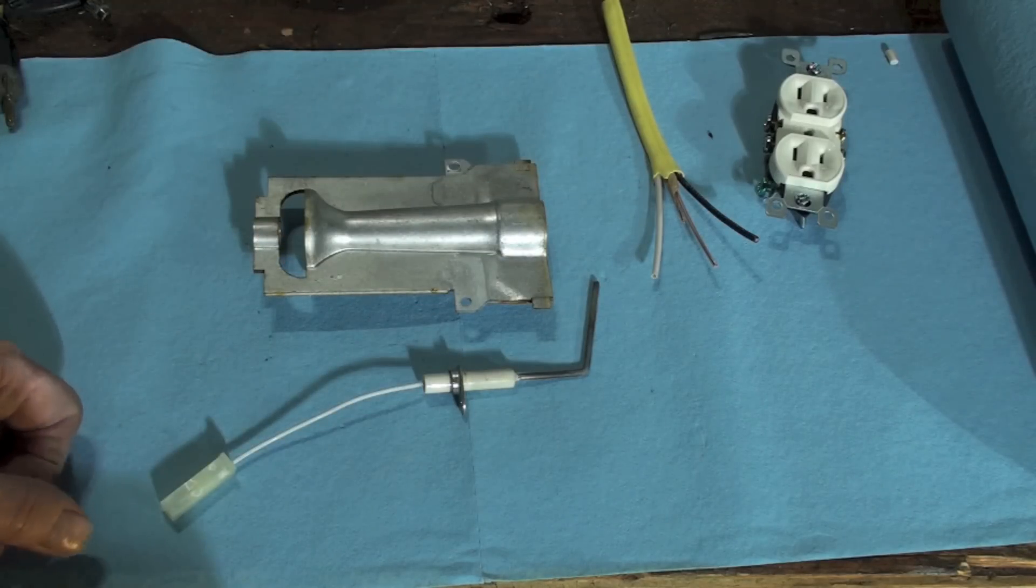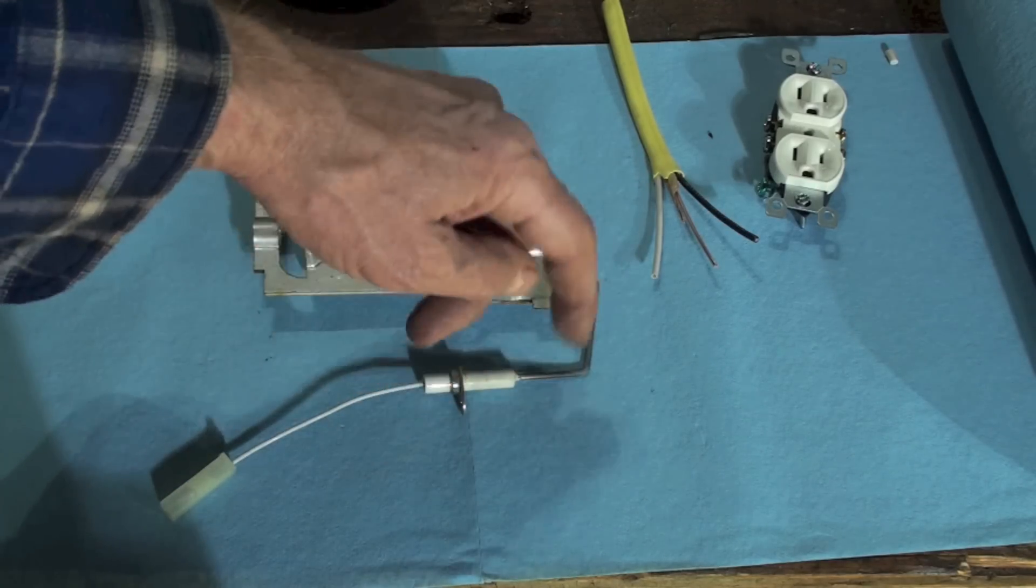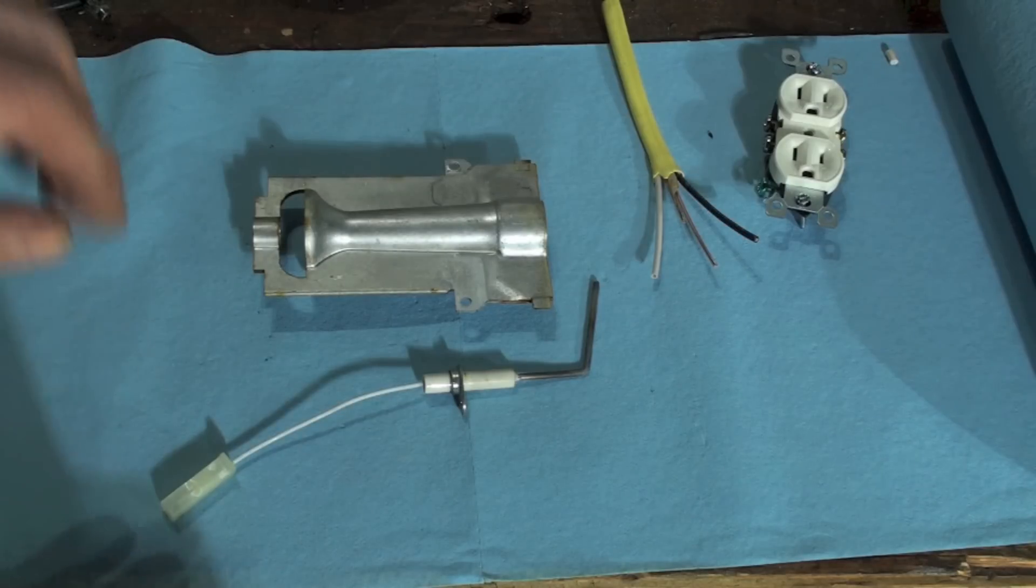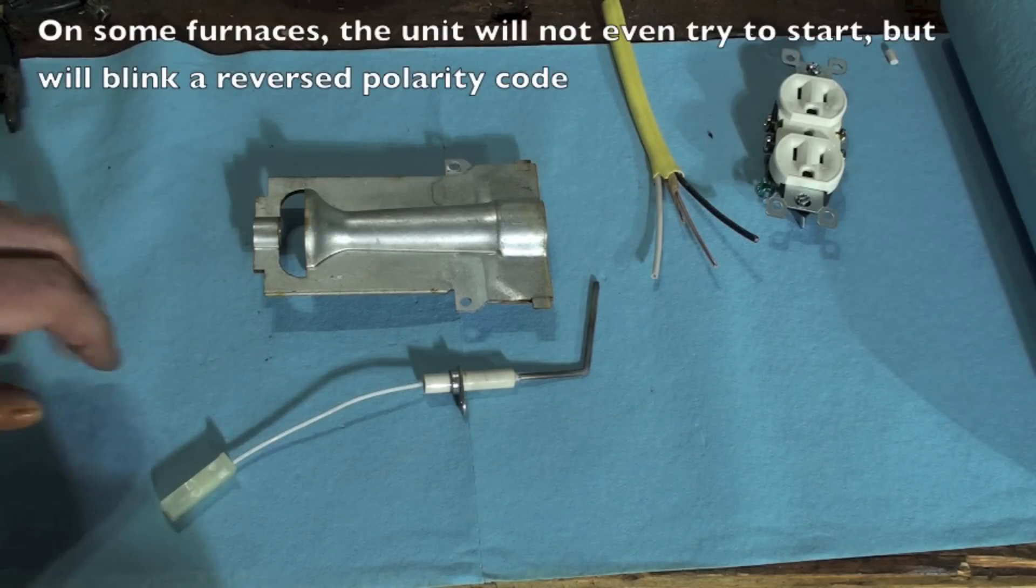Then I am essentially reversing this whole thing here. Then I'm feeding AC volts from here to the flame rod, and the flame rod is getting the rectified current back, but that makes it backwards and it doesn't rectify the correct way. It rectifies opposite. So the board sees it and says this is done, I'm not starting anymore. So you'll get a...